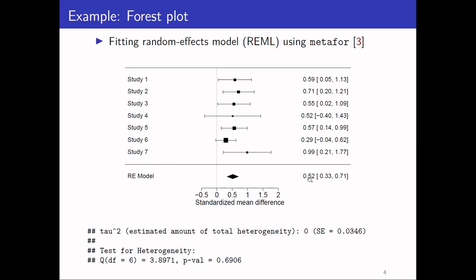This indicates an effect of about medium size using standard thresholds for interpreting effect sizes. Looking at the between-study variance estimate τ², if we test the null hypothesis of no heterogeneity, the p-value is 0.69, so there is no evidence for heterogeneity — we cannot reject the null hypothesis of no heterogeneity.